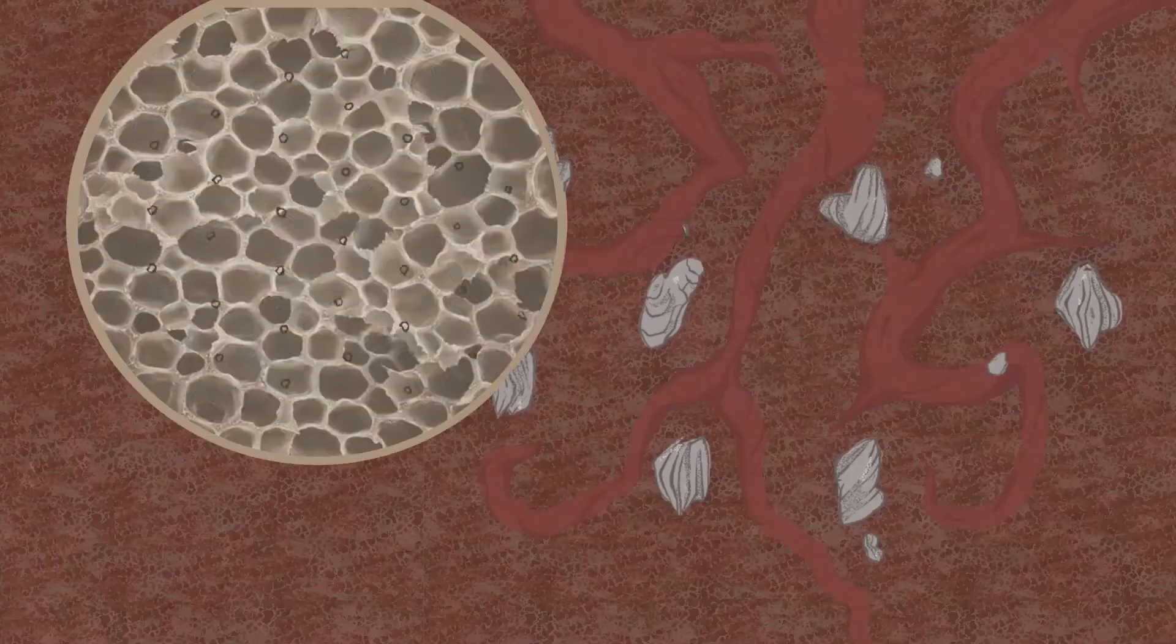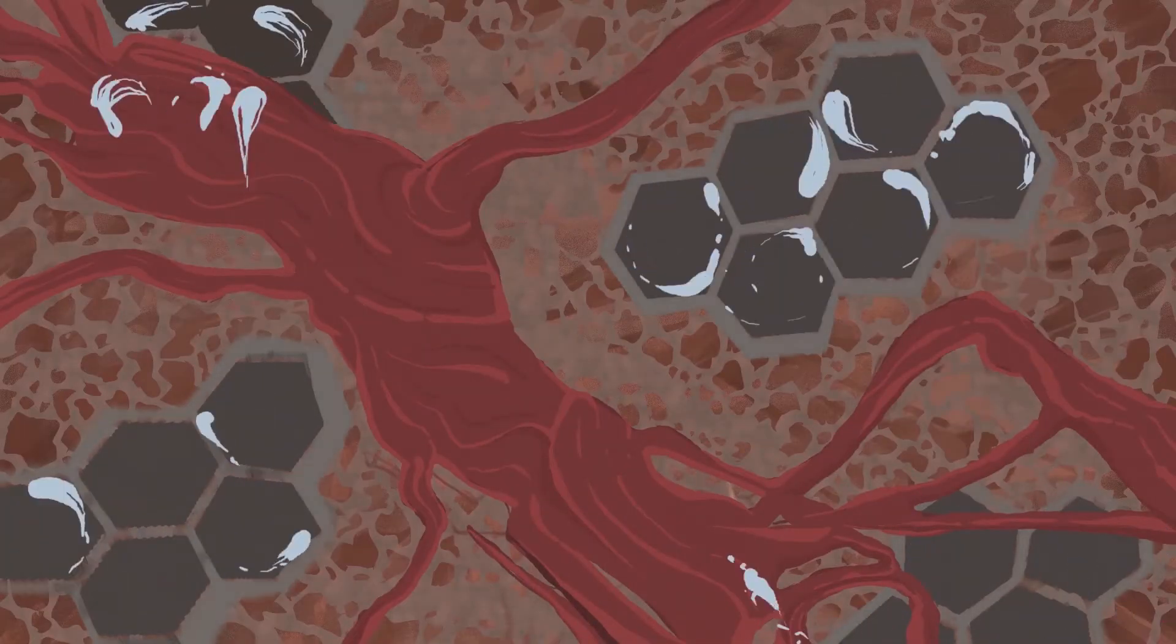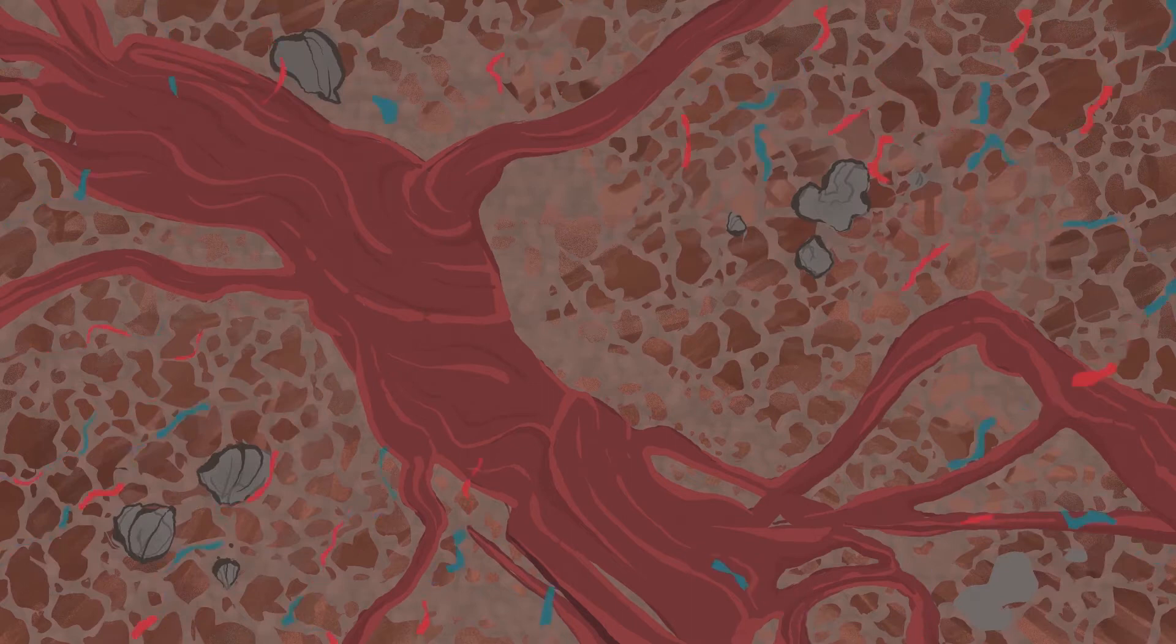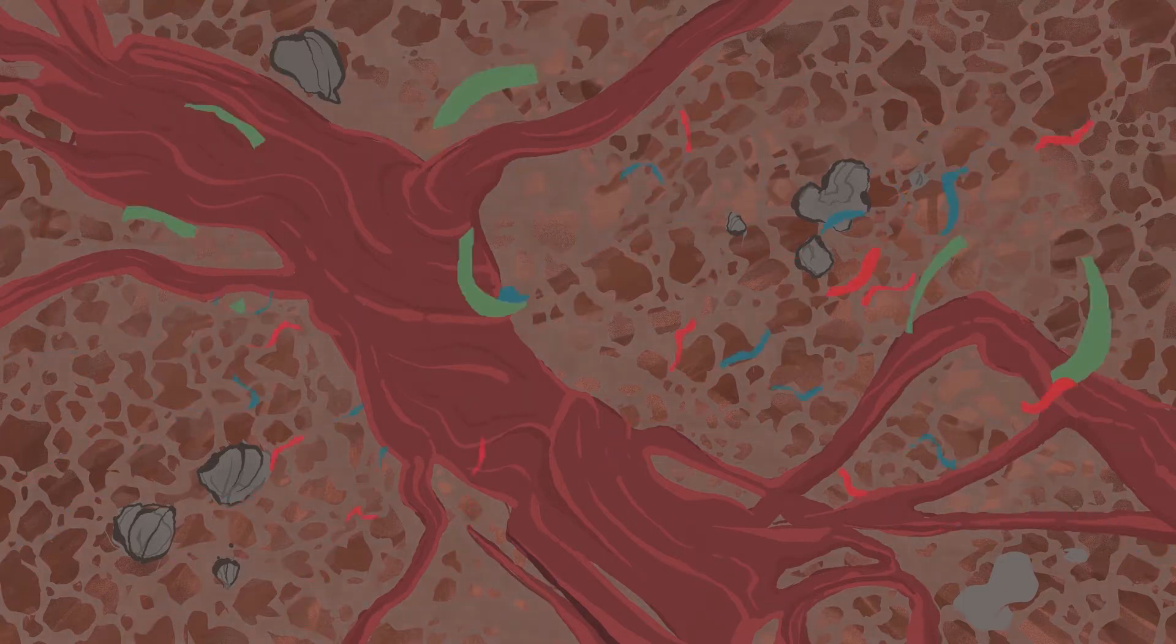Its microscopic honeycomb structure improves the aeration, water holding capacity, and nutrient retention of soil and stops it getting too compacted, meaning all the essentials that tree roots need are readily available and easily accessible.